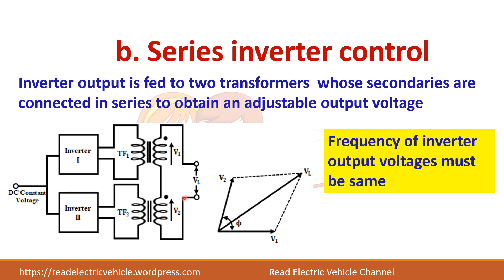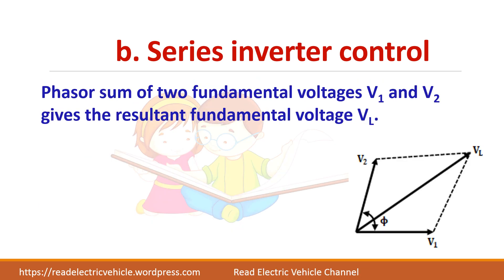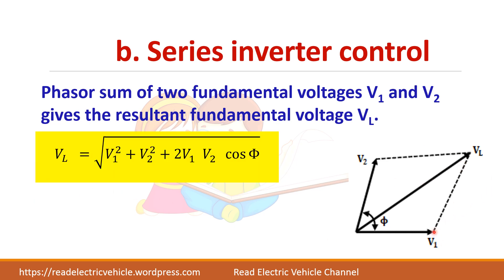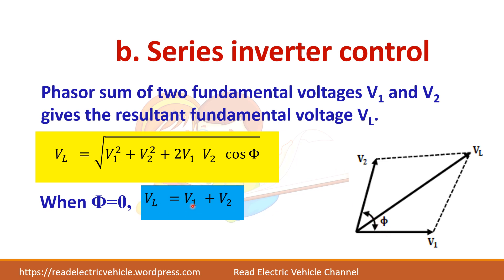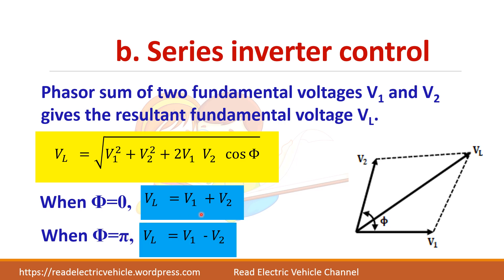The only problem in this method is that the frequency of the inverter outputs V1 and V2 should be the same so that you can add them. The phasor sum gives the resultant voltage: VL = √(V1² + V2² + 2·V1·V2·cos φ). When φ = 0, VL = V1 + V2. When φ = 180°, VL = V1 − V2, and when both magnitudes are equal the resultant voltage becomes zero.